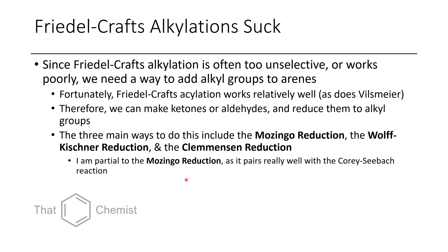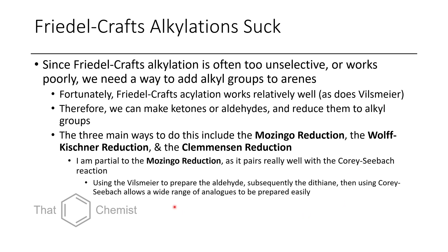I am in favor of the Mozingo reduction because you can do a lot of chemistry with dithianes, such as in the Corey-Seebach reaction. For example, you could use Vilsmeyer to prepare the aldehyde, then make the dithiane using acid and a dithiol, then use Corey-Seebach chemistry to alkylate with a series of different alkylating agents to prepare a large library of similar compounds.